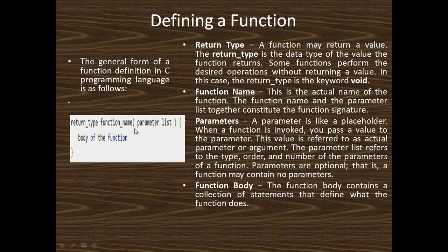Now I describe each of the features one by one. First, return type. A function may return a value. The return type is the data type of the value the function returns. Some functions perform the desired operations without returning a value. In this case, the return type is the keyword void. If you define the return type as integer, it returns integer values; if float, it returns floating type values; if character, it returns character values.